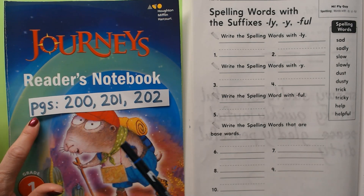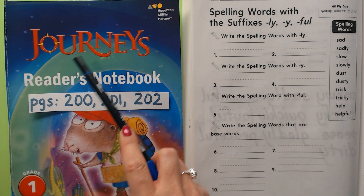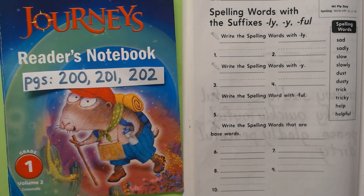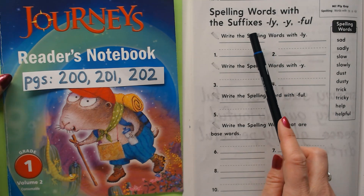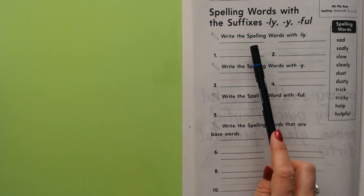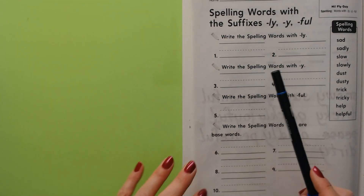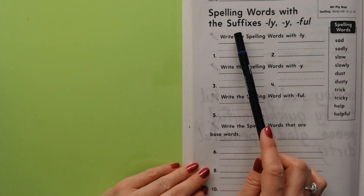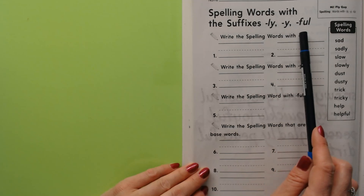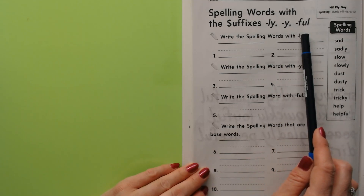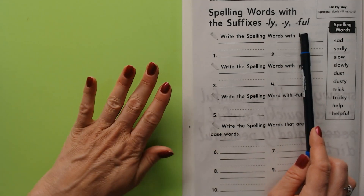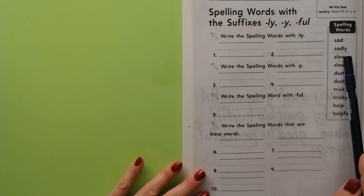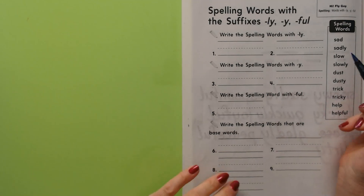Hi boys and girls, go ahead and turn to page 200 in your Journeys Reader's Notebook. This is Grade 1, Volume 2. We already had our phonics lesson yesterday about the suffixes -ly, -y, and -ful. The reason we're having a phonics lesson is because they're in our spelling words.